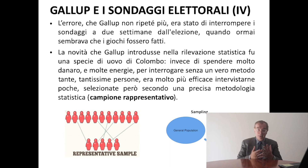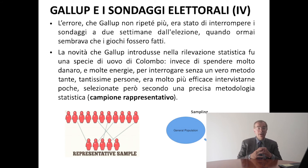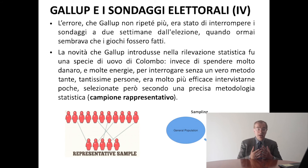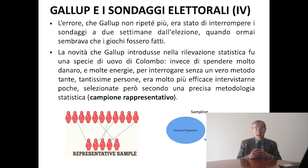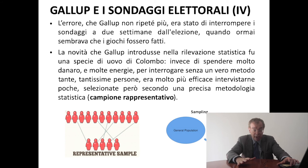Gallup è stato un grande: ogni volta che facciamo una previsione elettorale dobbiamo ripensare a questo pioniere della demoscopia. Il suo merito è stato introdurre nella rilevazione statistica una specie di uovo di Colombo: invece di interrogare senza un vero metodo tantissime persone, era molto più efficace intervistarne poche ma selezionate secondo una precisa metodologia statistica, generando un campione rappresentativo. Un campione rappresentativo riproduce in piccolo le stesse proporzioni che ci sono nella popolazione — tra maschi e femmine, giovani e adulti, benestanti e meno benestanti. Se il campione è distorto, anche milioni di casi danno la risposta terribilmente sbagliata.